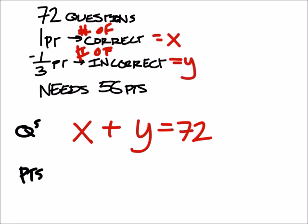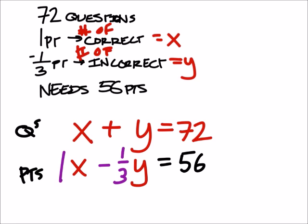On the other hand, for points, we've got correct questions and incorrect questions. The difference here is that you get one point for every correct question, and for every question you get incorrect, which is Y, we're going to take off a third of a point. And overall, we need a total of 56 points or more.